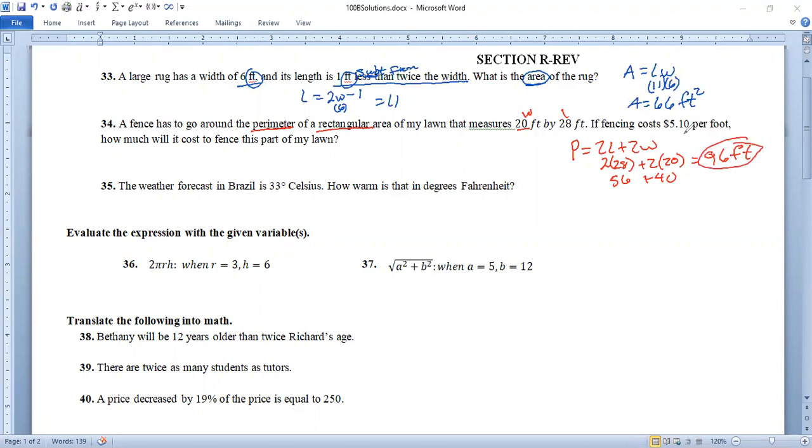Now it says it costs $5.10 per foot. So we have to take $5.10 times the 96 feet to go all the way around. Let me see 5.10 times 96. And that gives us equals $489.60. Excellent.